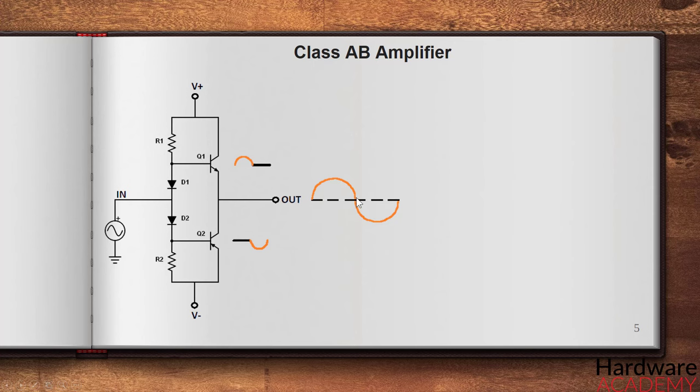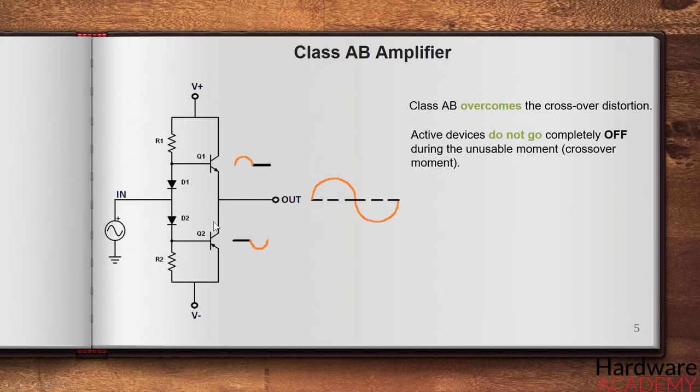An alternate approach to overcome the crossover distortion is to use the AB amplifier. Class AB amplifier uses intermediate conduction angle of both classes A and B. Thus, we can see the property of both class A and class B amplifier in this AB class of amplifier topology. Same as class B, it has the same configuration with two active devices which conduct during half of the cycles individually, but each device is biased differently so they do not get completely off during the unusable moment or the crossover moment. Each device does not leave the conduction immediately after completing the half of the sinusoidal waveform.